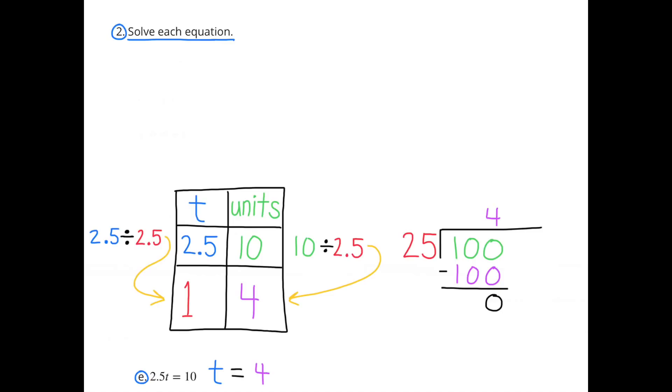In order to find out how much 1 t is worth, I have to divide 2 and 5 tenths by 2 and 5 tenths, and that gives me 1. So I have 1 t on the left-hand column. Since I divided this column by 2 and 5 tenths, I need to divide the 10 in the other column by 2 and 5 tenths. 10 divided by 2 and 5 tenths is the same as 100 divided by 25, like we learned in one of the previous lessons. 100 divided by 25 is 4. So when there's 1 t, it's worth 4 units. t equals 4.